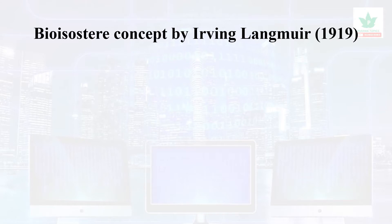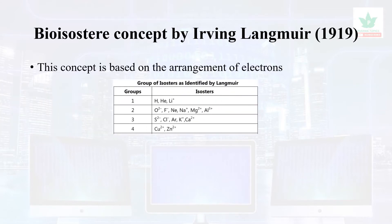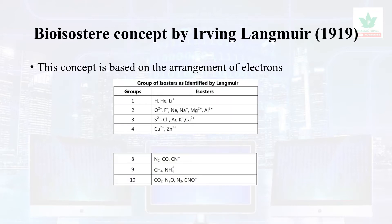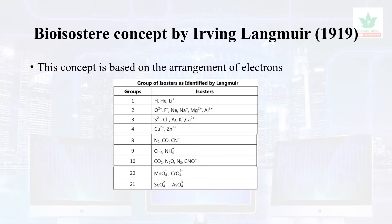The next concept by Langmuir is based on the arrangement of electrons. Elements within the same group could be interchanged — for example, copper could be interchanged with zinc. He also proposed that elements in groups 8, 9, 10, and 20 (such as manganese and chromium) could be interchanged.